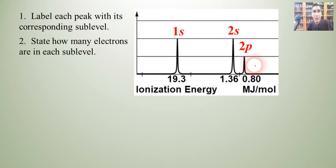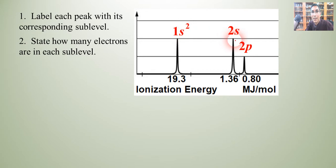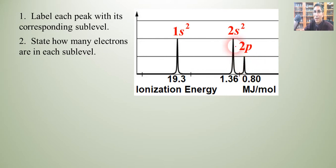Now let's state how many electrons are in each sublevel. It takes two electrons to fill the 1s — that's a given. The 2s has the same height as the 1s, so it's also 2 electrons. What about the 2p? Since the height is only half as tall as the one next to it, it has only half as many electrons. This would have to be 2p1.